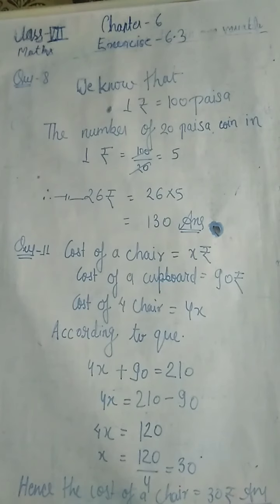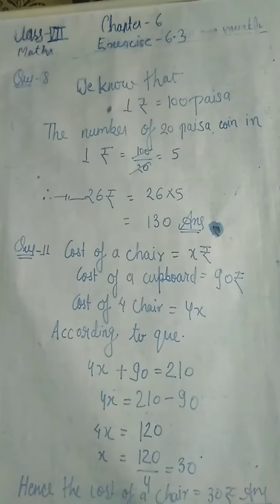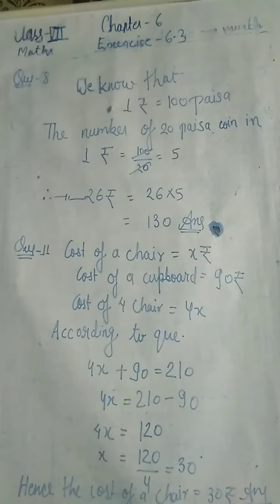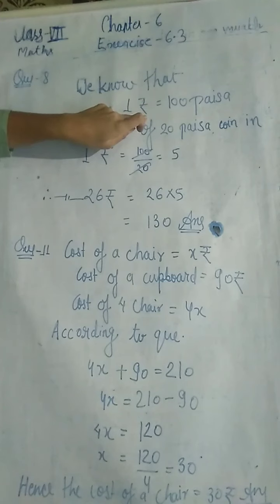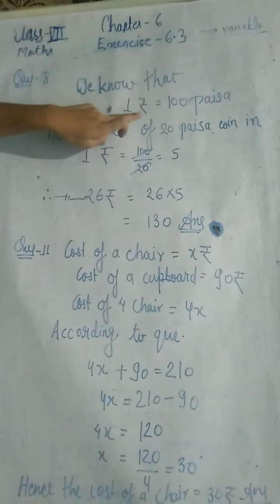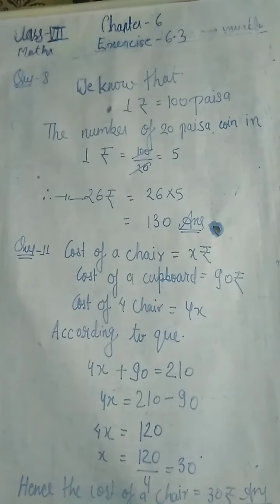Yahan pe baat ho rahi hai 20 paise ki. 20 paise ka pehle coin aata tha, jaise 1 rupee aur 2 rupees ke coins aate hain. Pehle 20 paise, 25 paise, 50 paise — inke coins aate the. Ab dekho — we know that 1 rupee is equal to 100 paise. Yeh aapko maloom hona chahiye.